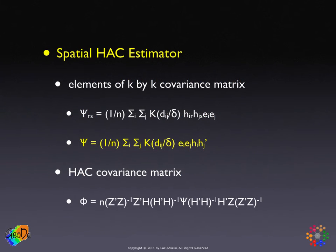With the kernel in hand, the estimation of the spatial HAC is again familiar. It is an average — 1 over n — with a double sum over i and j. We have a cross-product of the instrument vectors h_i and h_j, and then the cross-product of the corresponding residuals e_i and e_j. The new element is k, the kernel value, computed using the distance between i and j and the bandwidth delta. This kernel function ensures no spatial covariance beyond the given distance and imposes the distance decay weights. As a special case, the variance term is also included.